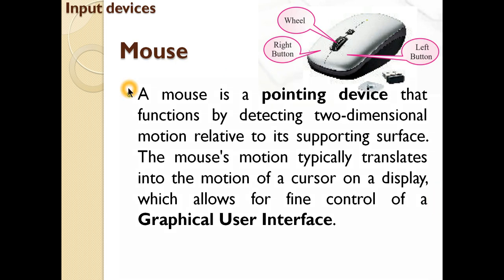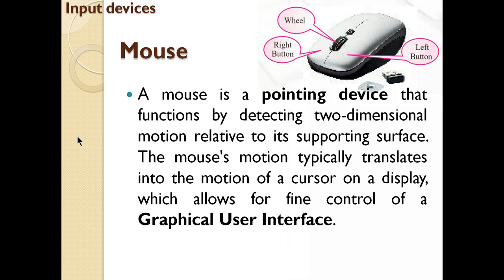The second most common input device is the mouse. This is a mouse — it's a pointing device. 'Pointing' means making an indication toward something. The mouse functions by detecting two-dimensional motion — it can move up, down, right, and left. It is used for clicking and allows fine control of the graphical user interface, meaning you can control your screen through the movement of the mouse. It has a right-click button, a left-click button, and a scroll wheel for movement.